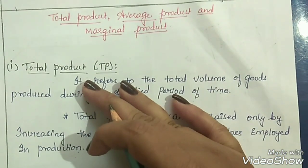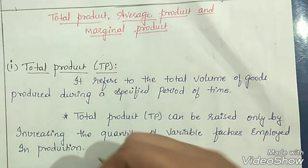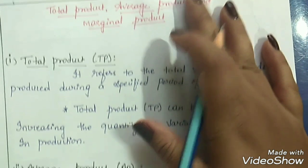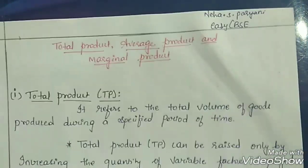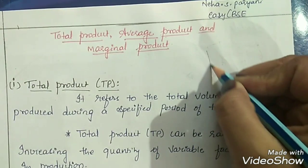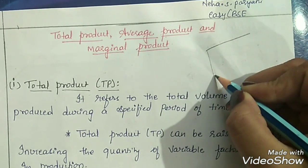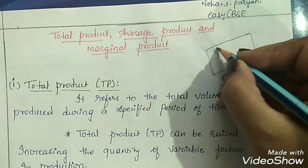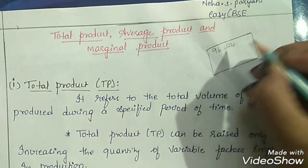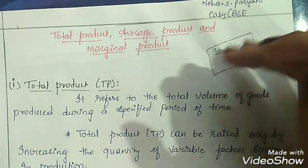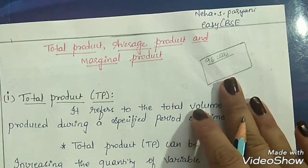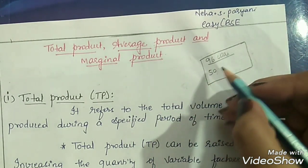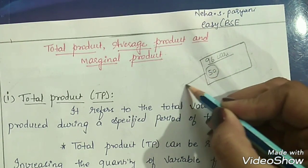Let's understand this with an example. Assume that we have a production unit whose capacity is producing 96 cars in a day — that is the maximum capacity. Here we are producing 50 cars in a day, so our total output becomes 50.